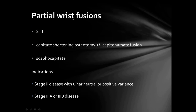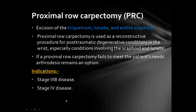Partial wrist fusion — either STT, capitate shortening osteotomy with or without capitohamate fusion, or scaphocapitate fusion — is indicated in Stage 2 disease with ulnar neutral or ulnar positive variance, and also in Stage 3A or 3B disease.